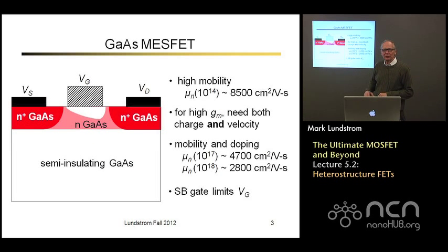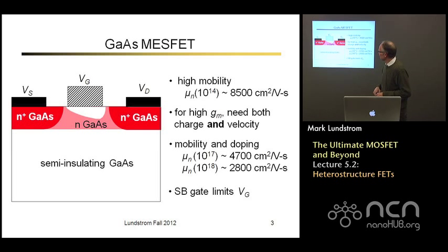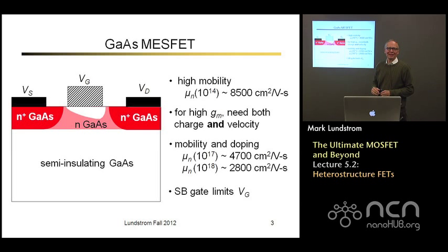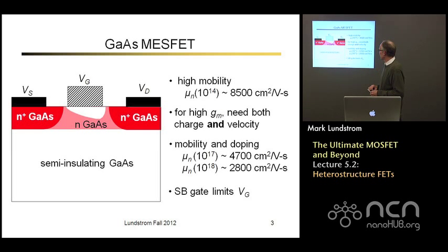It's a transistor made out of a three-five semiconductor. Gallium arsenide is a three-five semiconductor. One of the advantages of three-five semiconductors over silicon is that the electrons have very high mobility. In pure gallium arsenide at room temperature you can get a mobility of about 8,500 cm²/Vs compared to about 1,400 in pure silicon. So the mobilities are high — electrons move fast, making these high frequency devices.